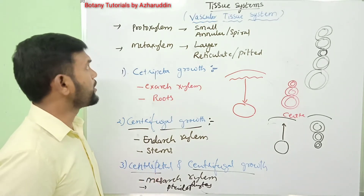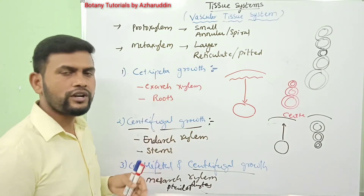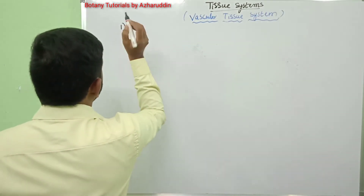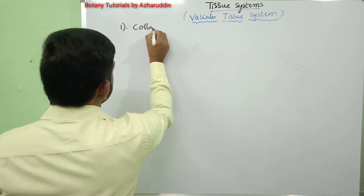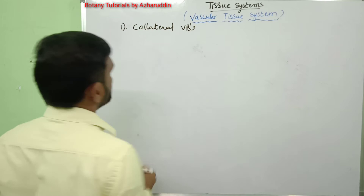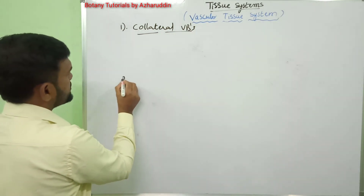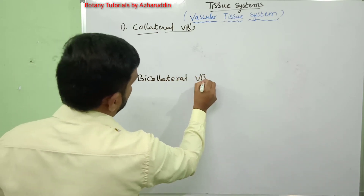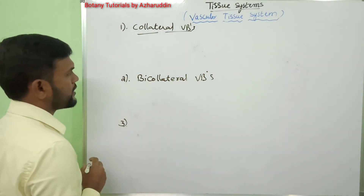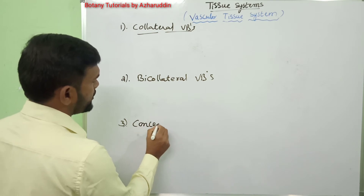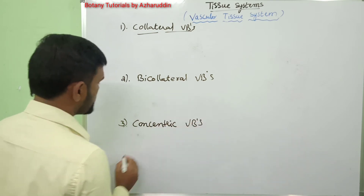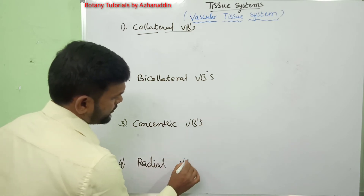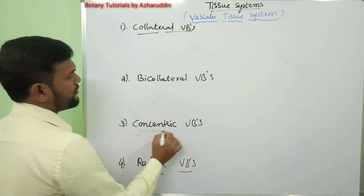Coming to types of vascular bundles — based on the arrangement of xylem and phloem, vascular bundles are classified into four main types: collateral vascular bundles, bicollateral vascular bundles, concentric vascular bundles, and radial vascular bundles.